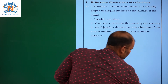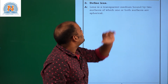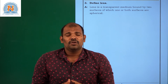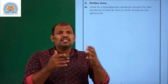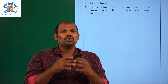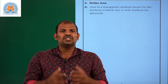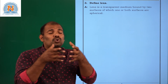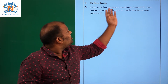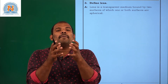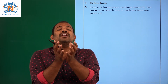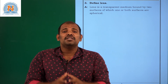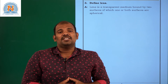Question number 3: Define lens. A lens is a transparent medium. Due to its transparency, light rays pass through it and undergo refraction. A lens is a transparent medium bounded by two spherical surfaces, which may be concave surfaces or two convex surfaces.